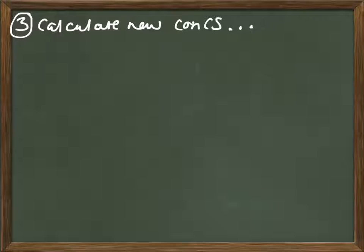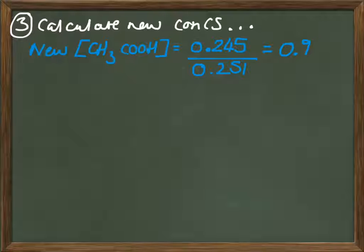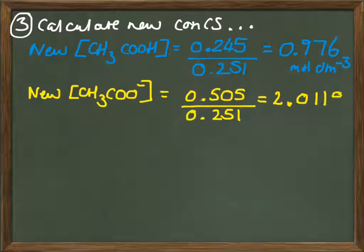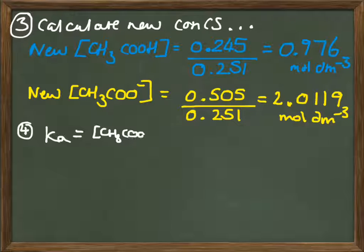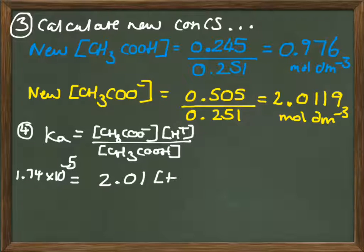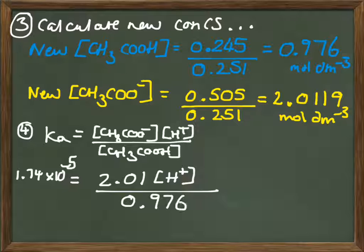Let's calculate our new concentrations. Our new concentration of our weak acid is going to be moles divided by total volume, so 0.976 moles per decimetre cubed. Our new concentration of ethanoate ions is 0.505 divided by 0.251, our volume, so 2.0119 moles per decimetre cubed. Our Ka expression can now be used. We can substitute in these new equilibrium concentrations and see what happens to our proton ion concentration.